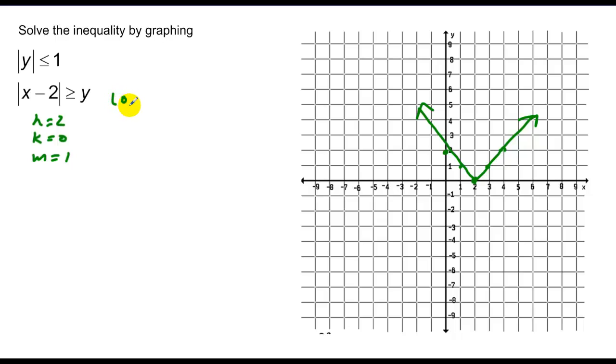Sample point is 0, 0. And with the sample point of 0, 0, I notice that 2 greater than or equal to 0 is true. So I'm shading, basically, around that absolute value.